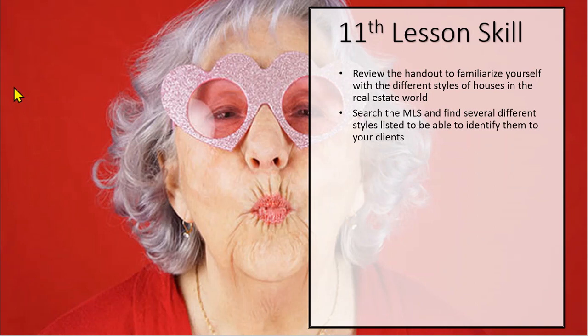What I encourage you to do is review the handout and familiarize yourself with the different styles of homes that we sell in the real estate world. One of the fun things you could do is search through the MLS system and see if you can find a style of each one of those homes. That would give you great familiarity and the ability to recognize a home so that when you market it, you can market it correctly — as a Victorian, a stick-built, a ranch, or whatever it tends to be.